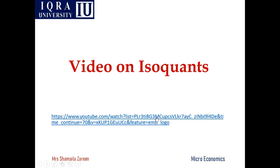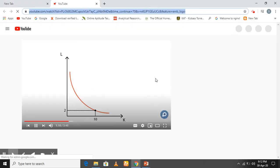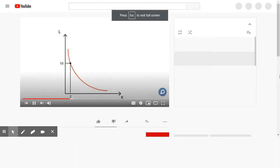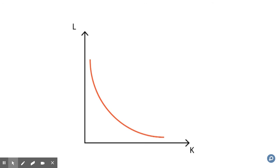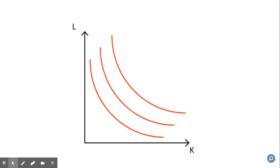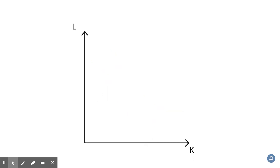Moving along the isoquant curve gives different input combinations but always the same amount of output. This relation gives us the marginal rate of technical substitution between inputs, which is the slope of the curve at each of its points. An increase in production only comes when we displace the isoquant curves outwards. The shape of isoquant curves is not limited to one example — there are an infinite number of possibilities. Let's review two particular shapes.